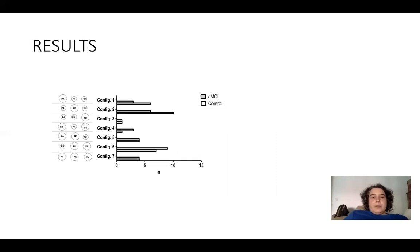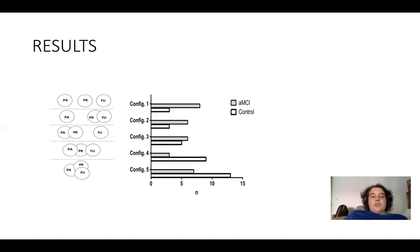Regarding the time orientation scale, participants had to choose among seven configurations. Each configuration featured three circles describing the past, present, and future. The degree of importance of each time dimension was ascribed to the size of the circle, so larger circles represent greater importance. No difference emerged between the MCI group and the control group. However, results regarding time relations were different. Participants had to choose among five configurations, each representing the relationships between past, present, and future.